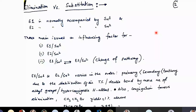Elimination reactions are mostly compared with substitution because they can go through similar intermediates. E1 is normally accompanied by SN1 because both go through a carbocation intermediate — it could either favor elimination or substitution. In the same way, E2 is also normally accompanied by SN2 because in both cases you have some sort of backside attack. We will discuss three main issues that influence the E1/SN1 product ratio, E2/SN2, and the change of pathway between E1/SN1 and E2/SN2. There are some reactions where if we change the condition, it could give E2 or SN2.